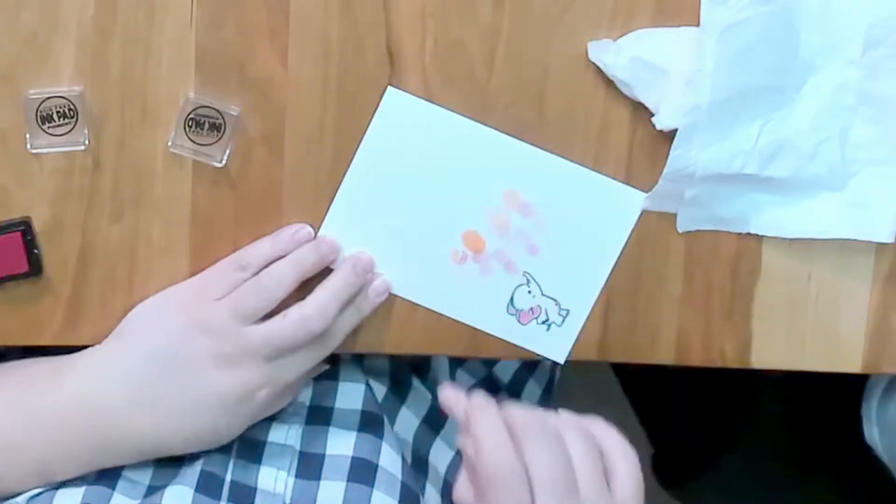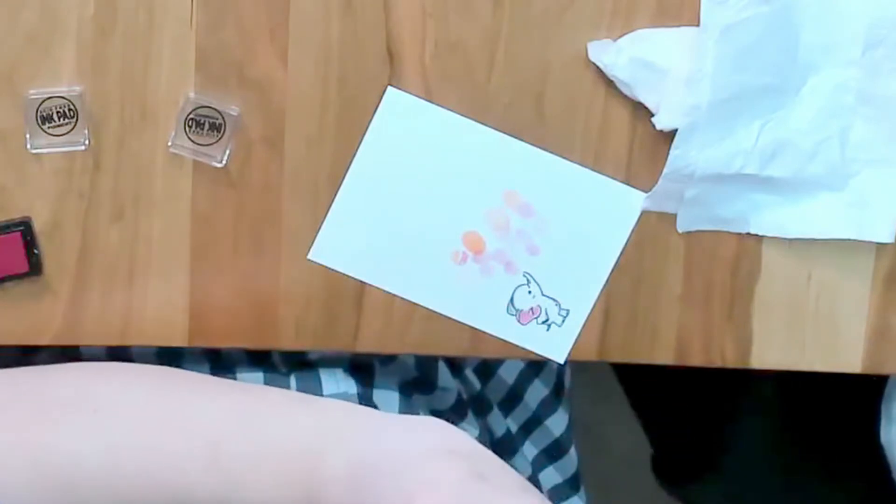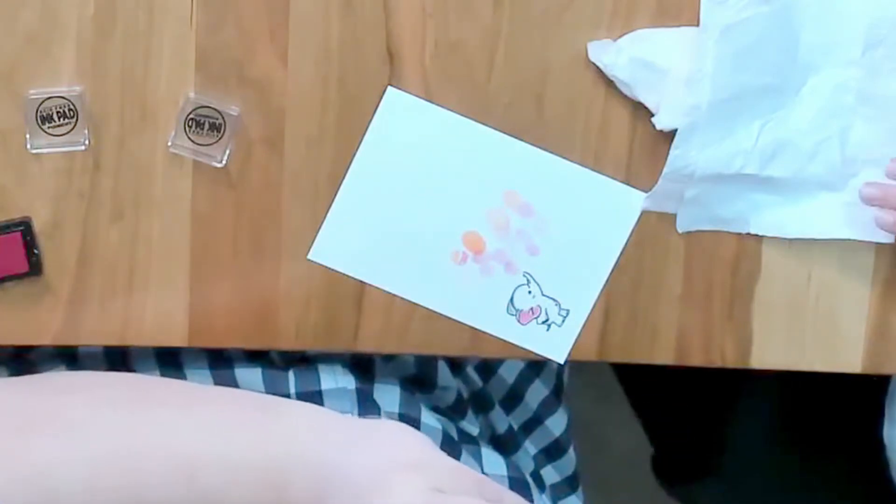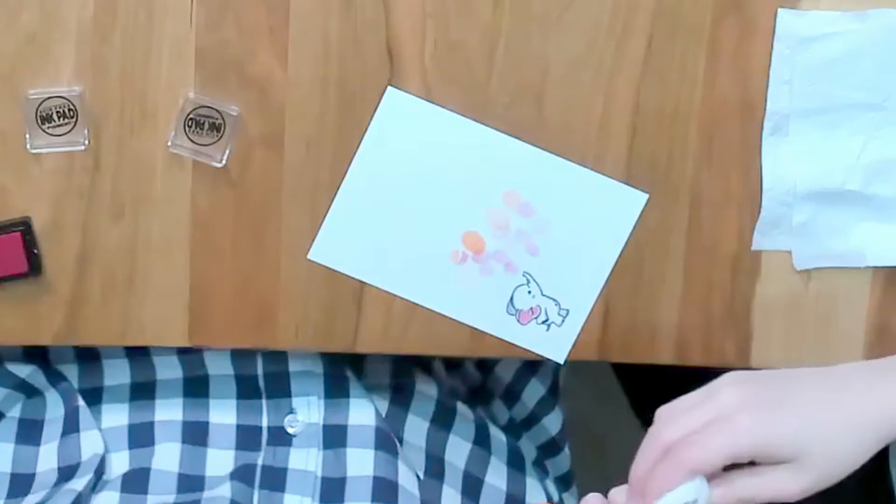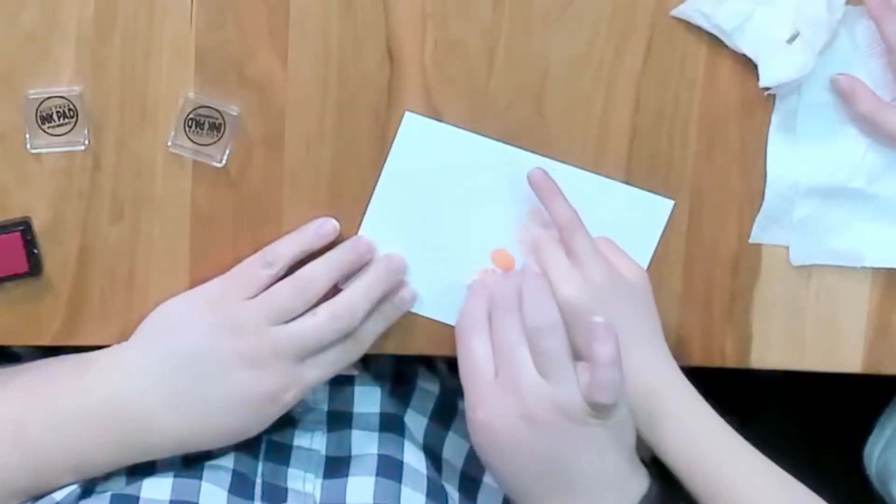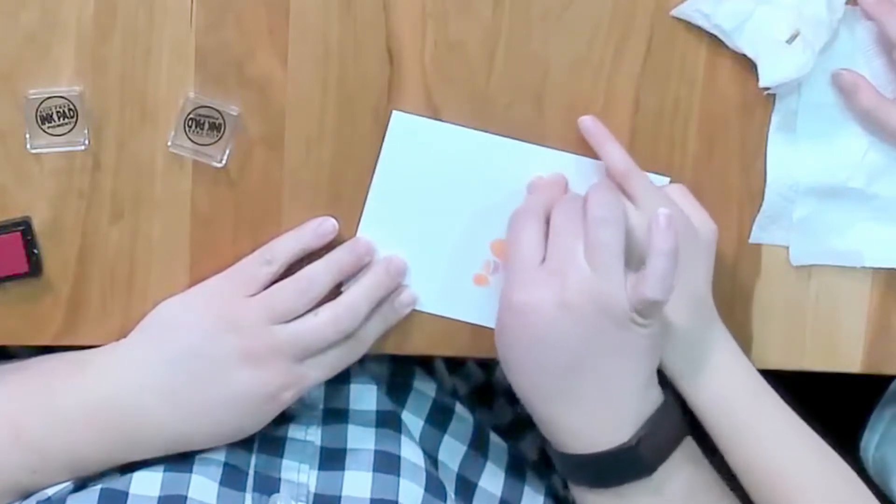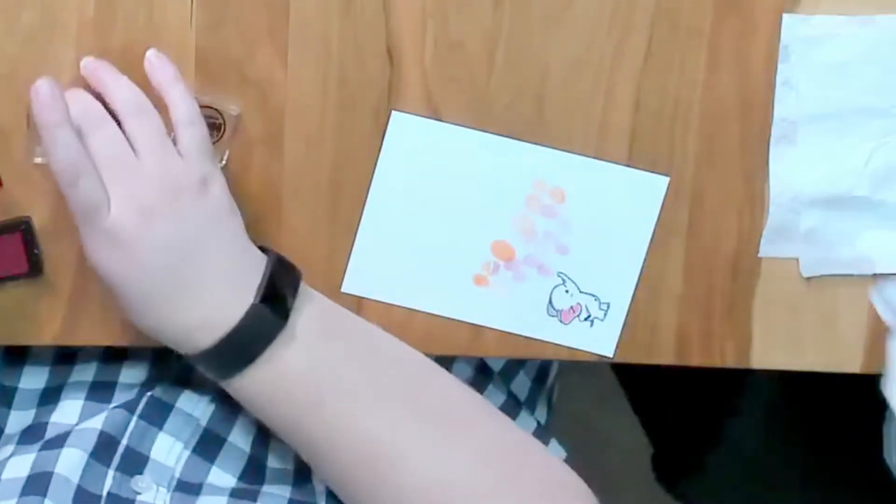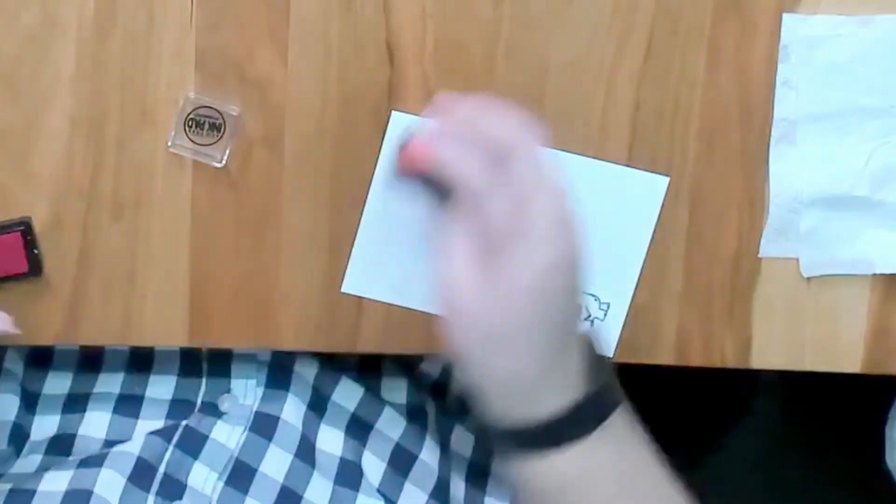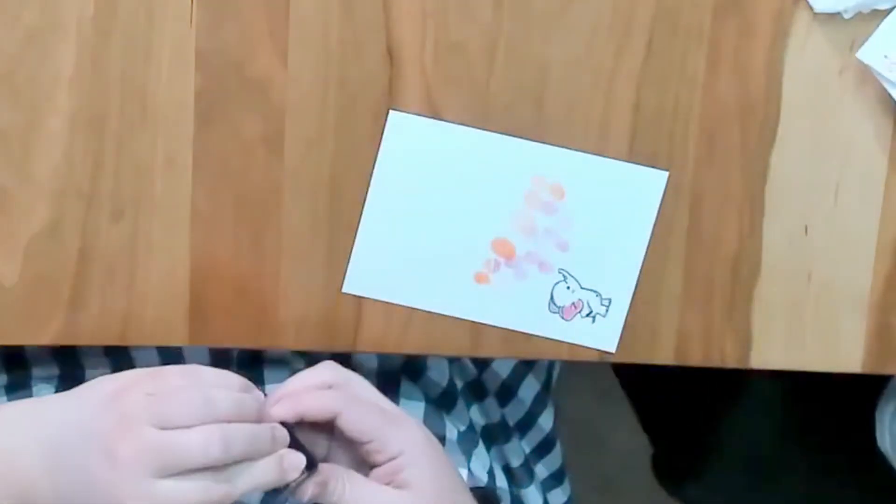Here's the neat part, it doesn't have to be perfect. Bubbles we know are big and small and a little here and a little there. Then we're going to go to our orange or our yellow. Got everything cleaned off? Okay.